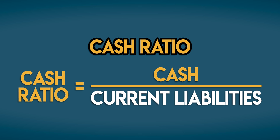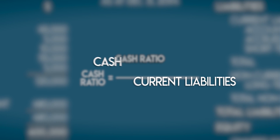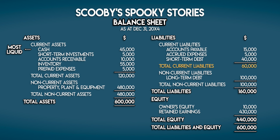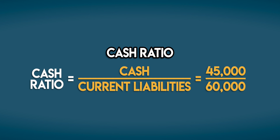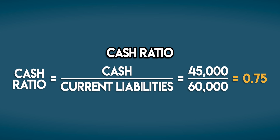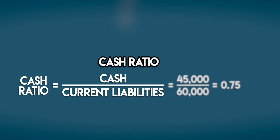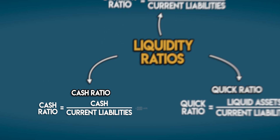We know our bookstore has current liabilities of $60,000 and $45,000 in cash — the most liquid asset of them all. So we calculate the cash ratio by dividing $45,000 in cash by $60,000 in current liabilities, which gives us 0.75. This means that Scooby's Spooky Stories does not have enough cash to cover its short-term debt.